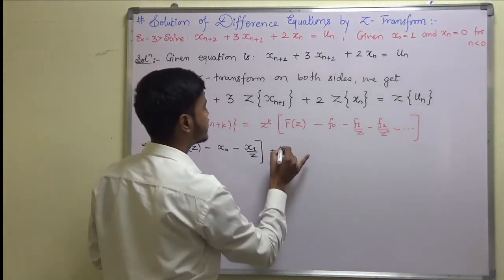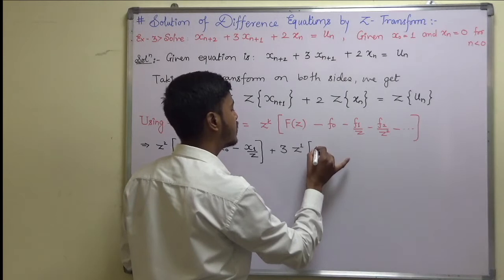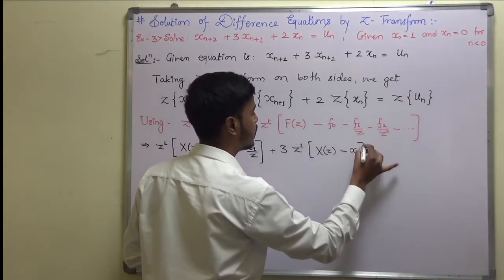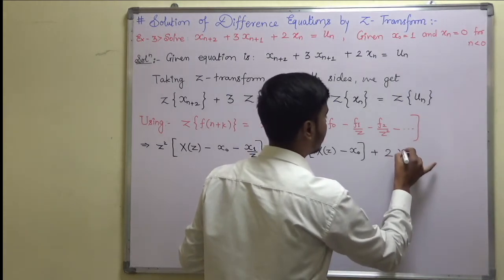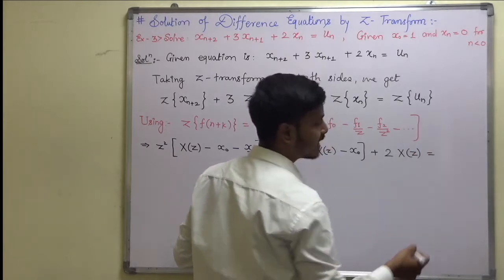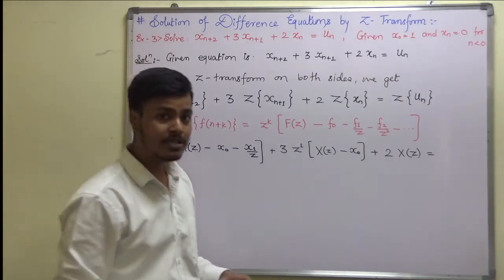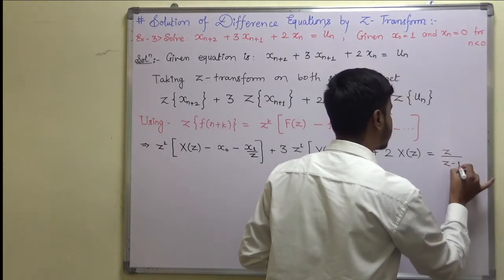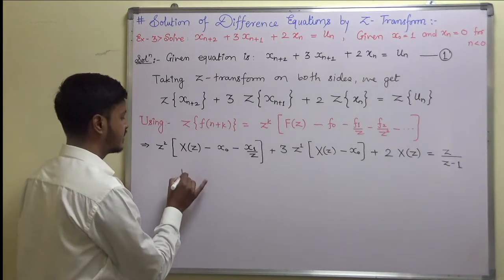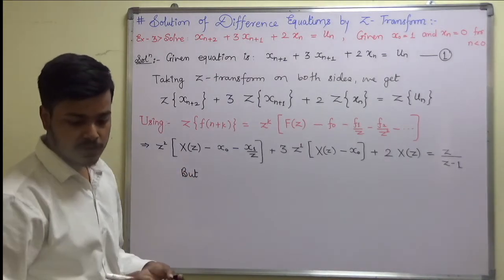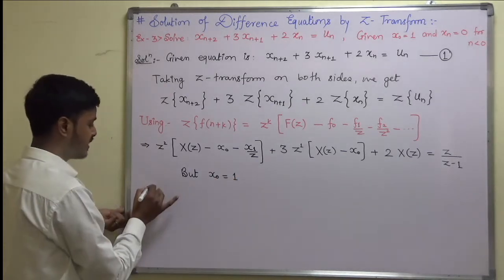Now let us write the Z-transform of the next term. That is 3 times z^1 into [X(z) - x0]. This is the Z-transform of the second term, plus 2 times X(z), equals the Z-transform of the unit step function. Remember Z-transform of the unit step function, or Z-transform of 1, is z/(z-1). Say this is equation 1.